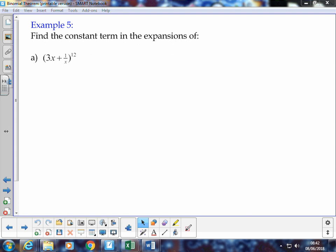Now to be a constant term, it means that we're really looking for, if we have x terms, we're looking for a value of a power of x that is 0. x to the power of 0 is 1. So whatever the variables are, we're looking for a power of 0. So we're going to approach it in exactly the same way. This example, 3x plus 1 over x to the power of 12. We can start off by assembling our general term rule.